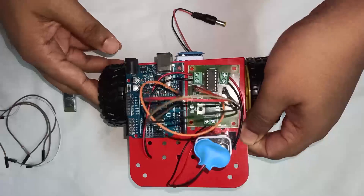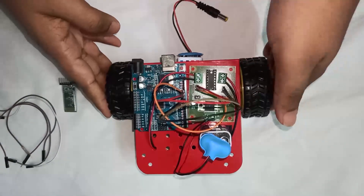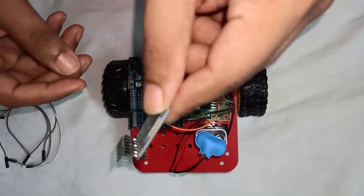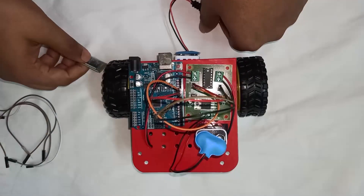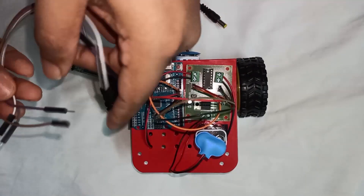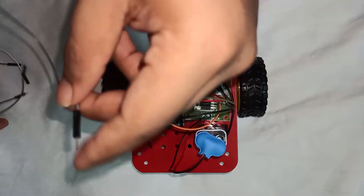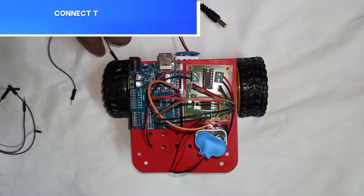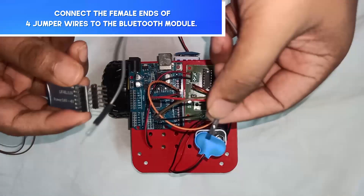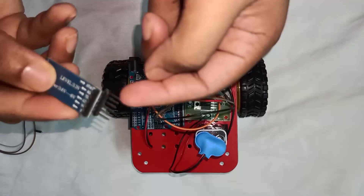Our robot is already detached from the computer after the code has been transmitted to the Arduino board. Now we will fix the Bluetooth module to the robot. We will take four male-to-female jumper wires — one side is male, the other side is female. The module contains all male pins, so we connect the female ends of the jumper wires to four of its pins.